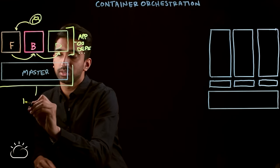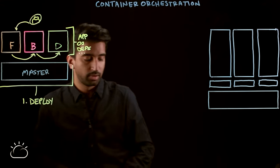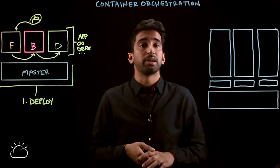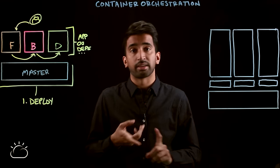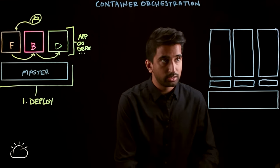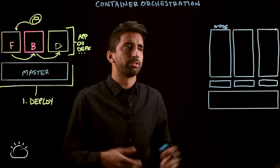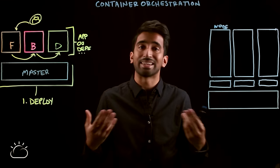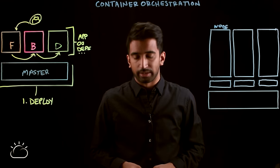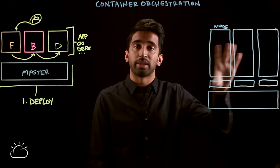First, we'll talk about deploying. The key difference from the developer view is they're no longer containers, but actual compute resources — things like VMs, or in the Kubernetes world we call these worker nodes. Each one would be an actual compute worker node, something like four vCPUs with eight gigabytes of RAM. The first thing you would use an orchestration platform to do is something simple: just deploying out an application.